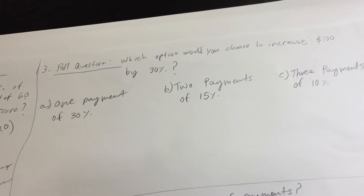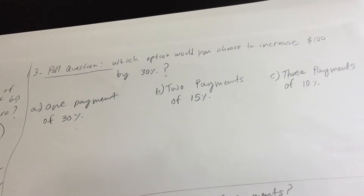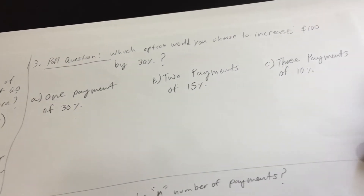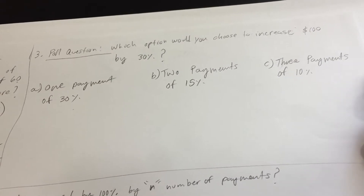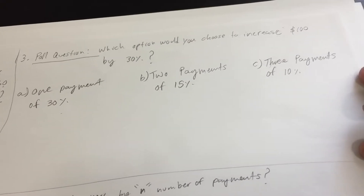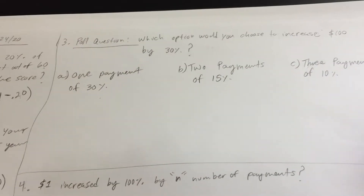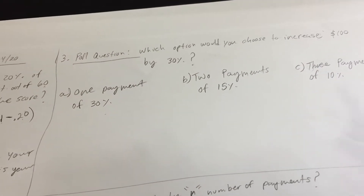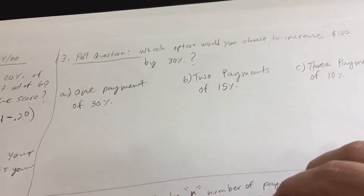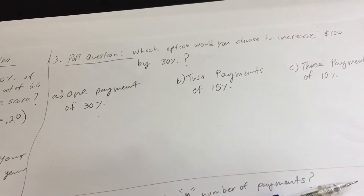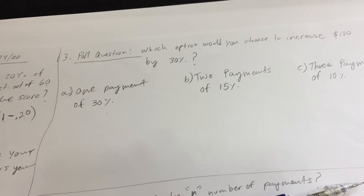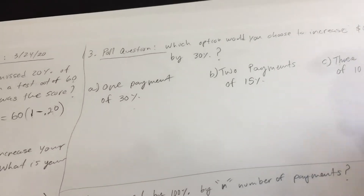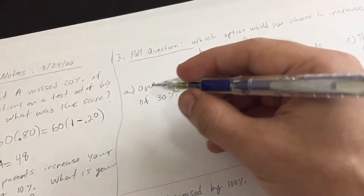Here's the poll question. I was pretty shocked at the results — you can check them out on Schoology. Most people think that either three payments is the best option, or that it doesn't matter because it still accumulates to 30% and will be the same amount. Well, let's explore this — I'll treat it like the previous problems.